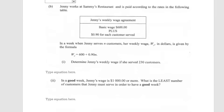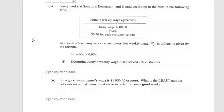Part b says Jenny works at Sammy's Restaurant and is paid according to the rates in a table. Jenny's basic wage is $6.00 plus 90 cents for each customer she serves. In a week when Jenny serves n customers, her weekly wage is given by the formula: Wj = 600 + 0.90 × n. Part one asks us to determine Jenny's weekly wage if she served 230 customers.